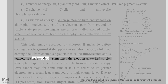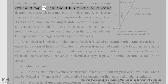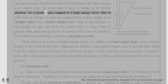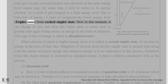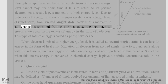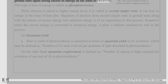Sometimes the electron at the excited singlet state gets its spin reversed, because two electrons at the same energy level cannot stay together. It fails to return to its partner electron; as a result, it gets trapped at a high energy level. Due to a little loss of energy, it stays at a comparatively lower energy level called the triplet state. From this triplet state it comes back to ground state, losing excess energy in the form of radiation. This type of energy loss is called phosphorescence.